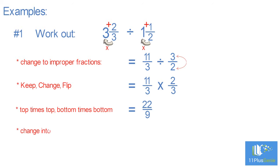Change the answer into a mixed number. 9 into 22 is 2 with a remainder of 4, and the remainder forms the fraction 4 ninths.